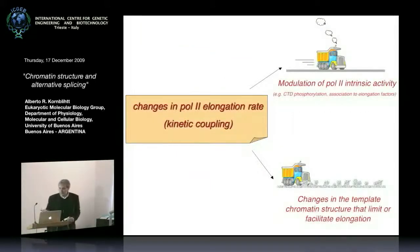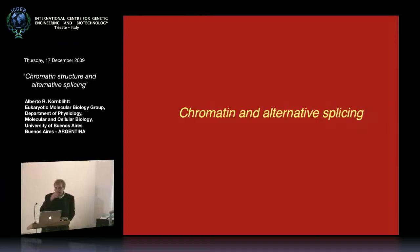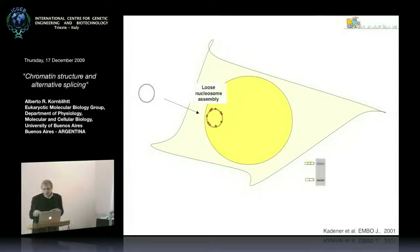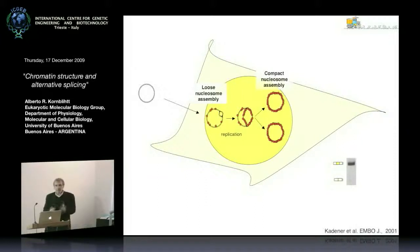The second part of my talk deals with changes in template chromatin structure that can limit or facilitate elongation — linking chromatin to alternative splicing. The idea came from work by Sebastian Caden in my lab in 2001, in which we found that when a transfected plasmid was allowed to replicate, more compact nucleosome assembly on the plasmid was accompanied by a change in splicing of the reporter mini-gene.